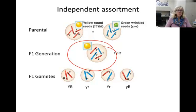Some gametes get yellow and round alleles, and some are also yellow and wrinkled. This principle is called independent assortment. Genes on different chromosomes assort into gametes independently of each other.